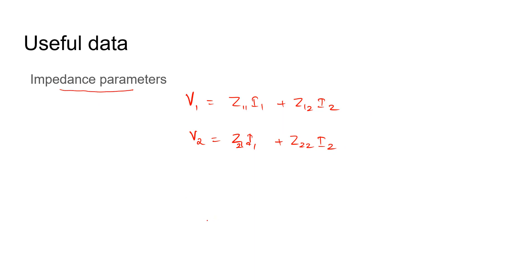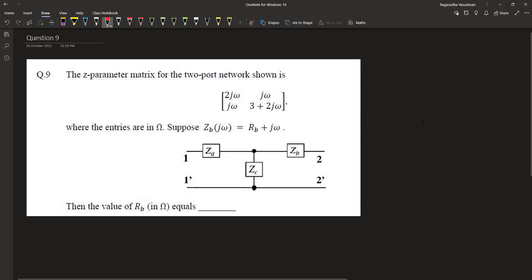Now, to convert it into a t-parameter network, the value of za is given by z11 - z12, where ztc is z12 or z21, and zb = z22 - z12. We are making this conversion because the value of zb is given in terms of the t-parameter matrix.